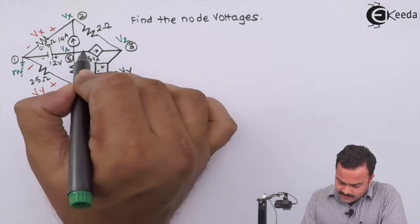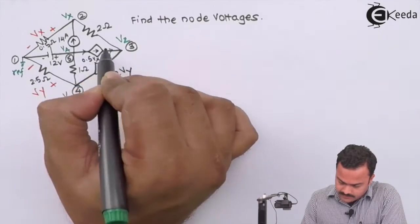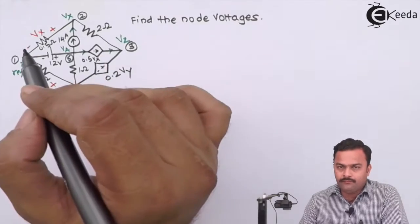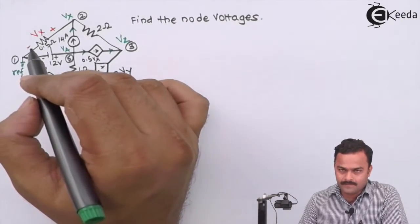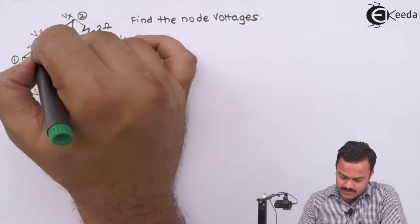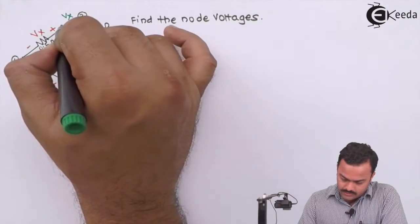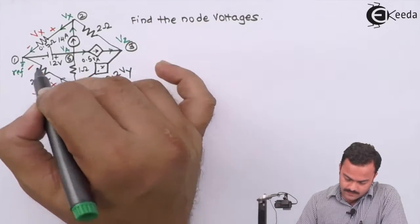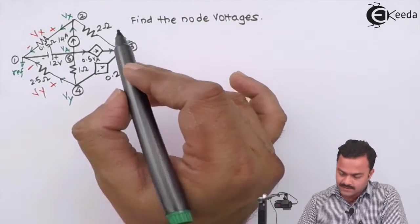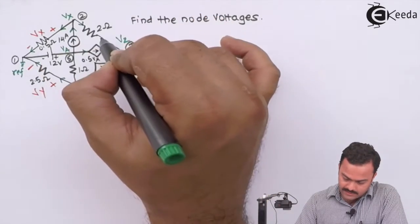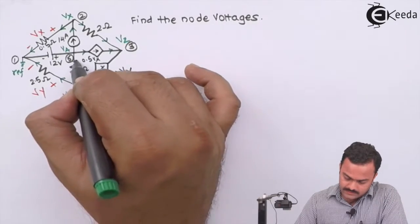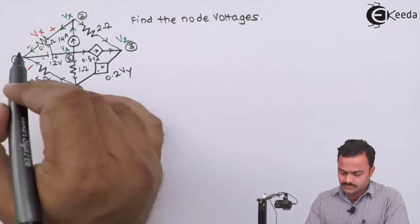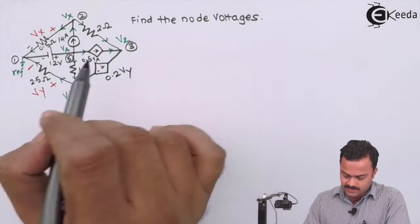While marking the branch currents, first priority will be given to the current sources, which will maintain their current direction. Second priority will be given to the voltage sources — to maintain their marked polarity (plus/minus), current needs to be passed accordingly. Last, we mark the current direction for the resistors the way we want. I have marked the current directions accordingly, excluding the voltage sources — one independent and one dependent.